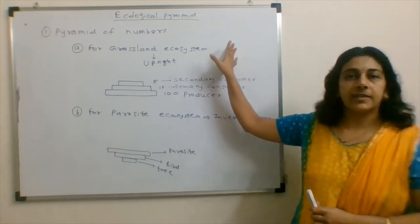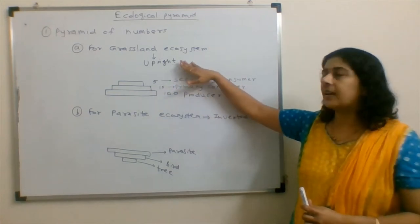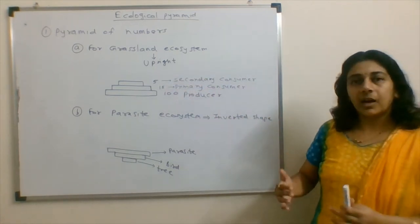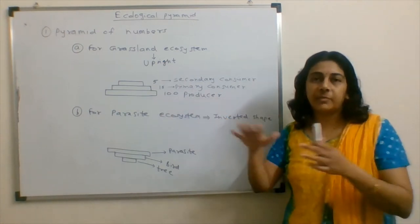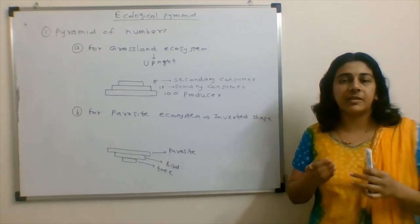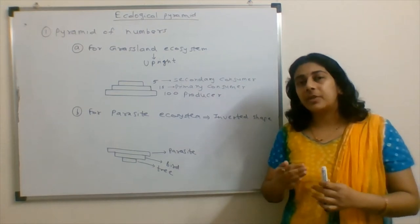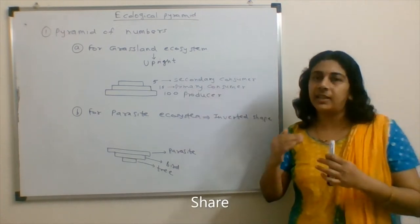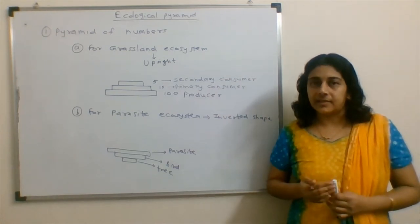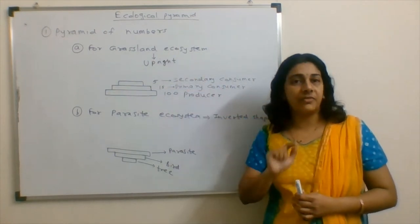First, starting with pyramid of numbers. The first example we have taken is grassland ecosystem in which we find pyramid of number as an upright pyramid. In a grassland ecosystem, there would be grasses, the producers. At the producer level, the number of producers may be a hundred. Depending on those grasses, deer may be there. So the number of deer would be less. The primary consumers would be less than the producers. And secondary consumers, lion or tiger, would be again less. So this gives us an upright pyramid for grassland ecosystem, which is a pyramid of number.